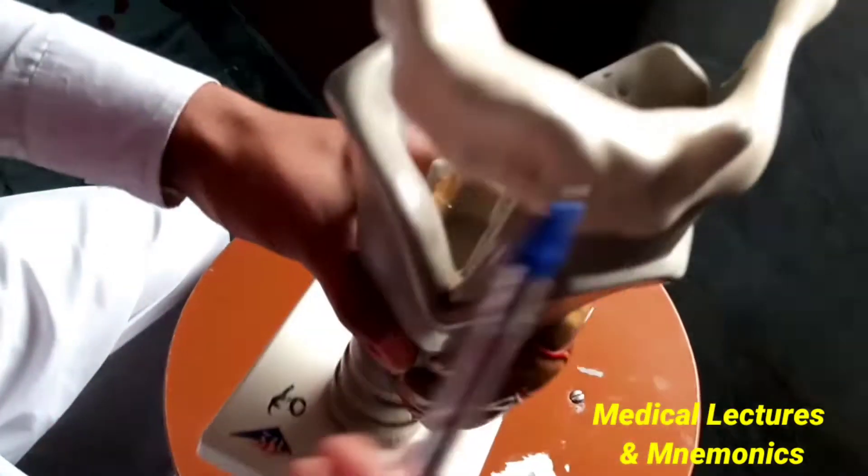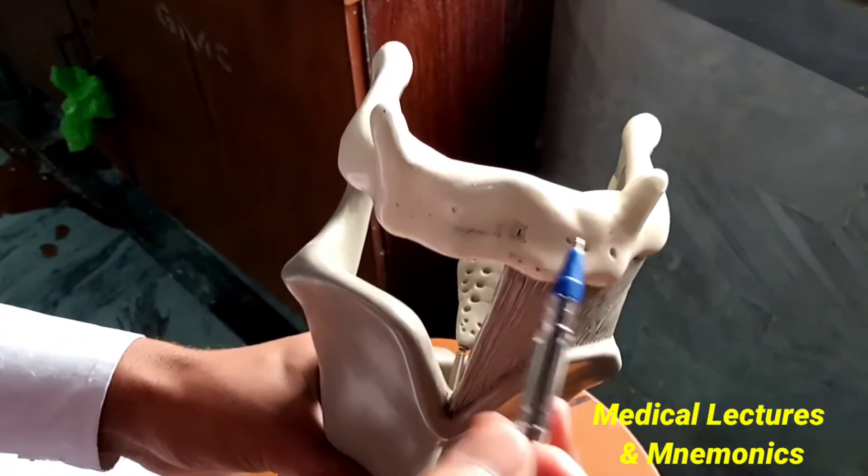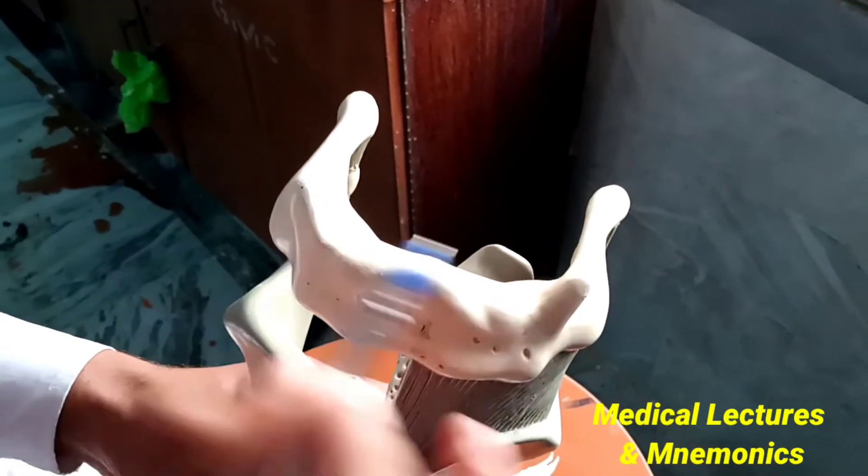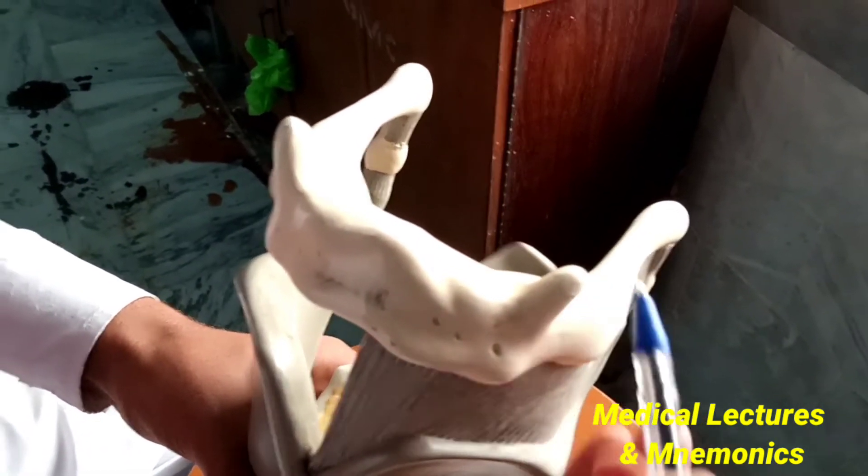This is the lesser cornua, which articulates both with the body and the greater cornua of the hyoid bone.